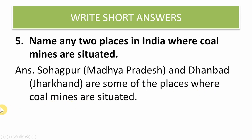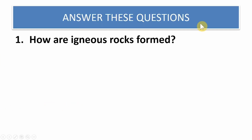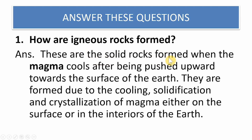Now answer these long questions. How are igneous rocks formed? These are solid rocks formed when magma cools after being pushed upward towards the surface of the earth. They are formed due to cooling, solidification, and crystallization of magma, either on the surface or in the interior of the earth.